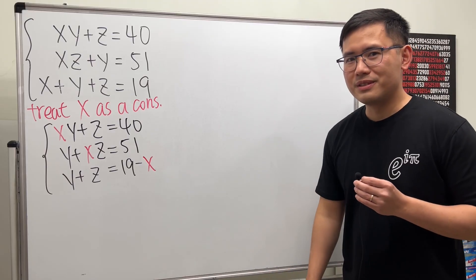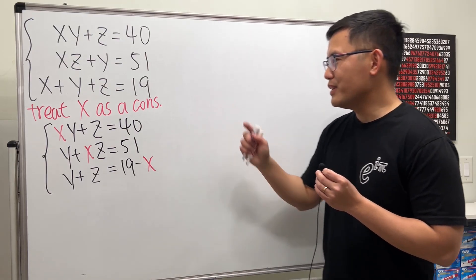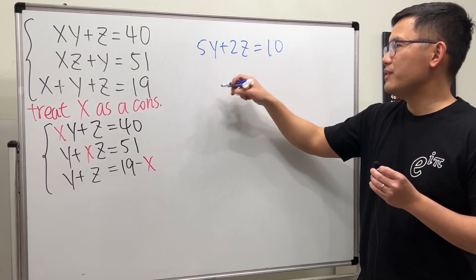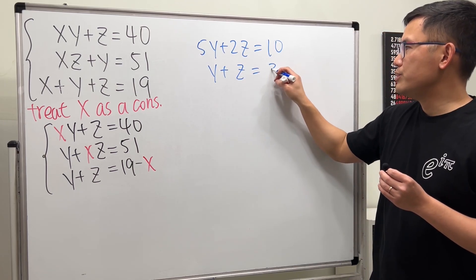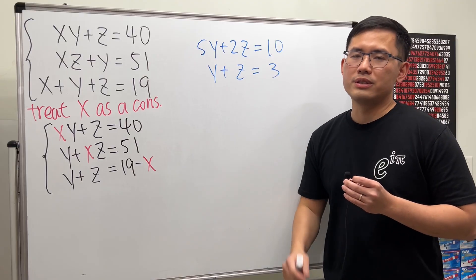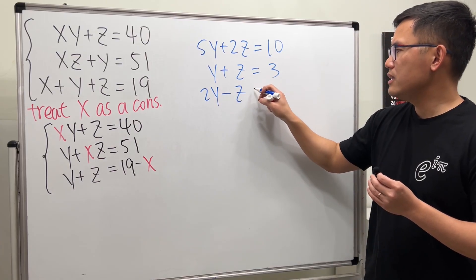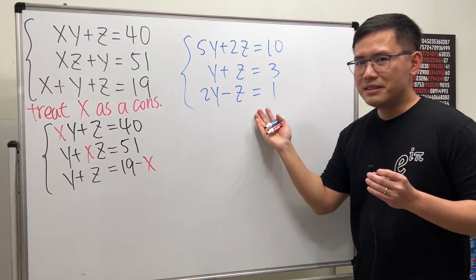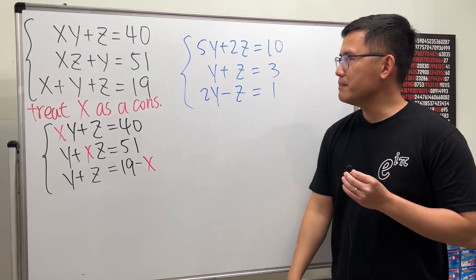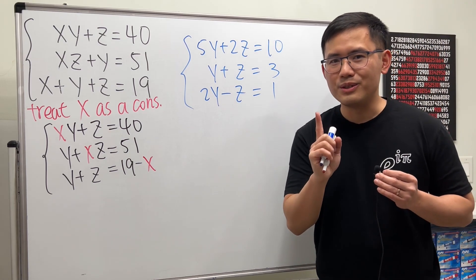Having more equations than unknowns is sometimes dangerous. For example, if I give you 5y + 2z = 10 and y + z = 3, we can solve that — those two lines do intersect at a unique point. But if I add a third equation, say 2y − z = 1, this system no longer has a solution, because these three lines don't all intersect at a single point.